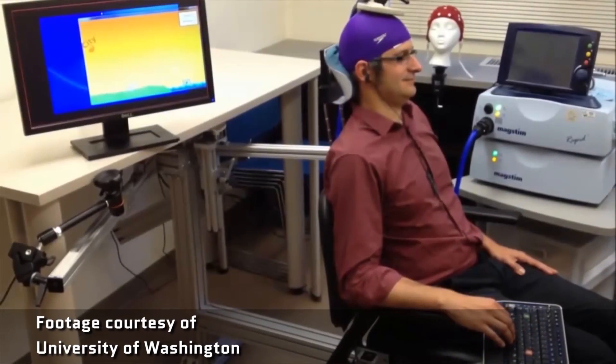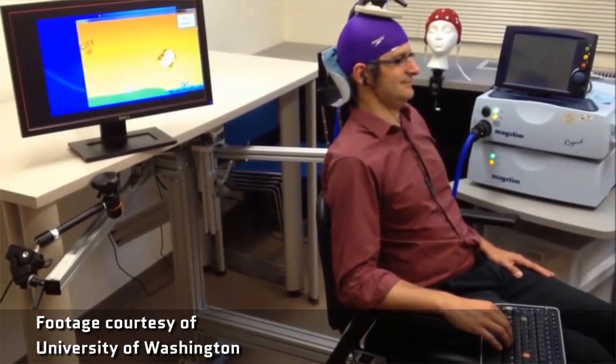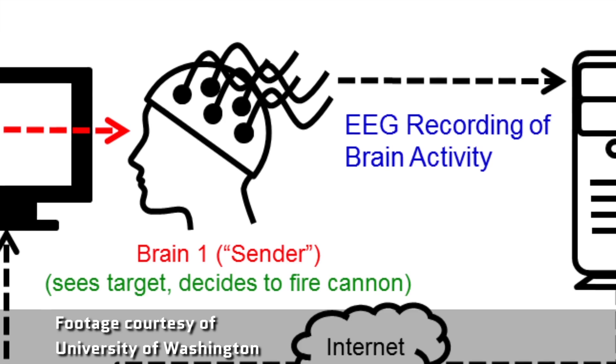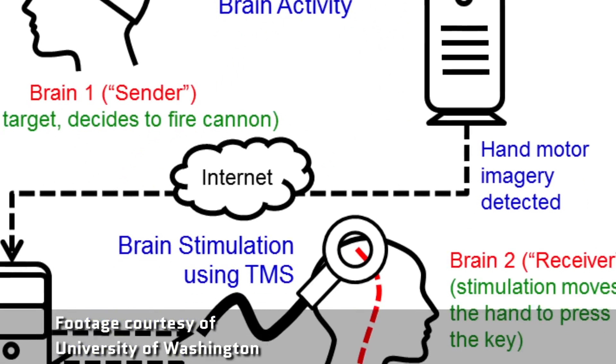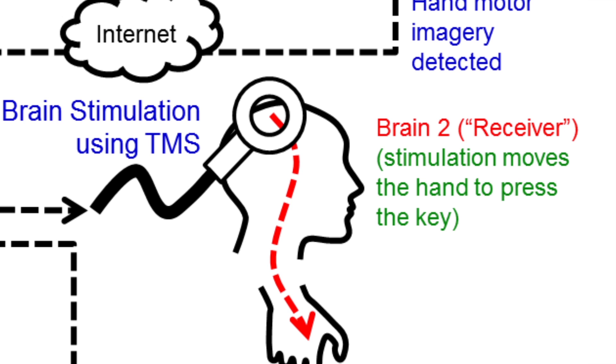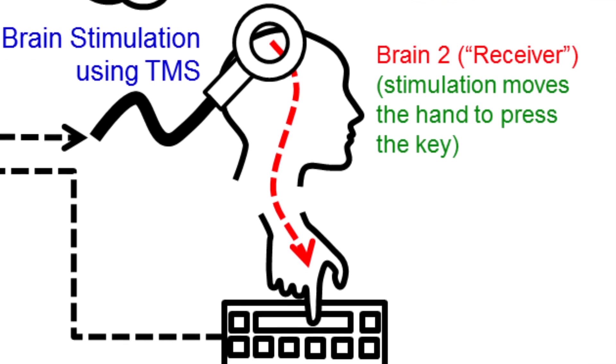The other person only held a controller, and they wore a transcranial magnetic coil over their left motor cortex. So when the person seeing the screen got a prompt to push a button, they thought about pushing that button really hard, and the EEG picked up those brain waves, sent a signal that was picked up by the transcranial magnetic coil that stimulated the motor cortex, and the person holding the controller involuntarily pushed the button.